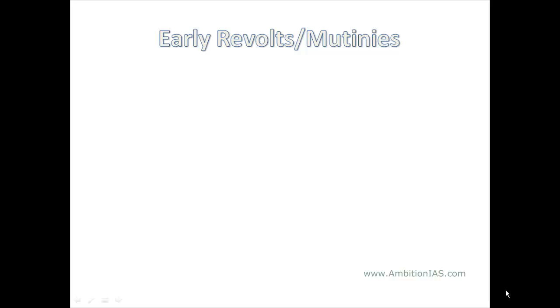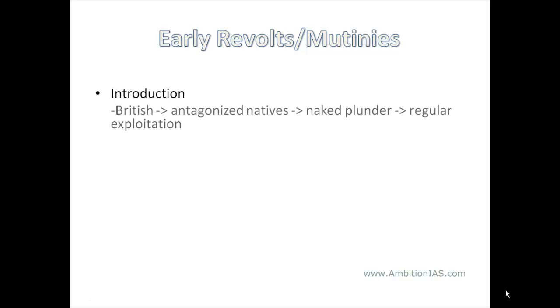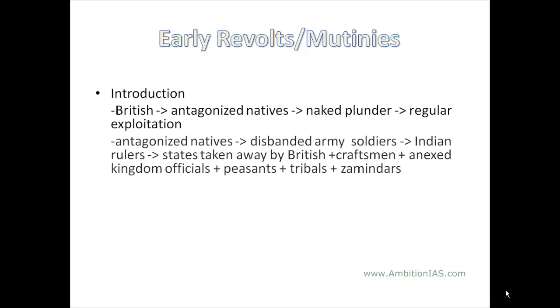We shall talk of the reasons for the revolts to have started during British Rule. The British antagonized the Indian natives through their naked plunder, regular exploitation, and corrupt policies. These antagonized natives included the disbanded army soldiers of Indian rulers whose states were taken away by the British, as well as craftsmen, annexed kingdom officials, peasants, tribals, and zamindars.